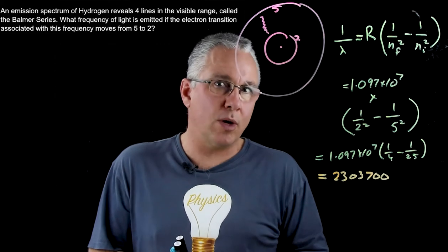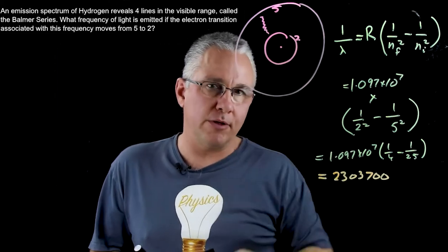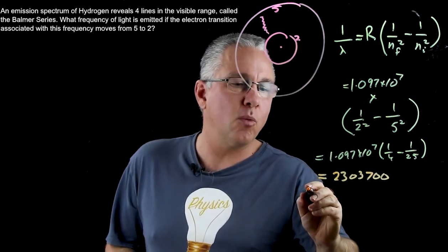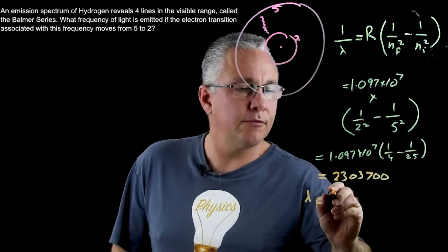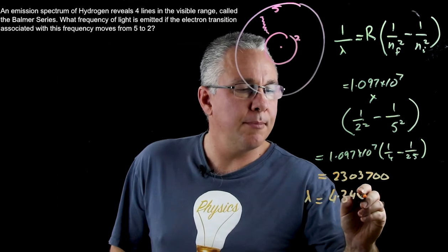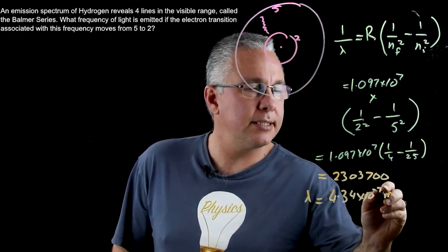If you mathematically calculate that out, you're going to get 2303700. Now that's the wave number, so that is the 1 over the wavelength. So of course that means our wavelength is going to be the inverse of that, and I'm going to get 4.34 by 10 to the power of negative 7 meters.